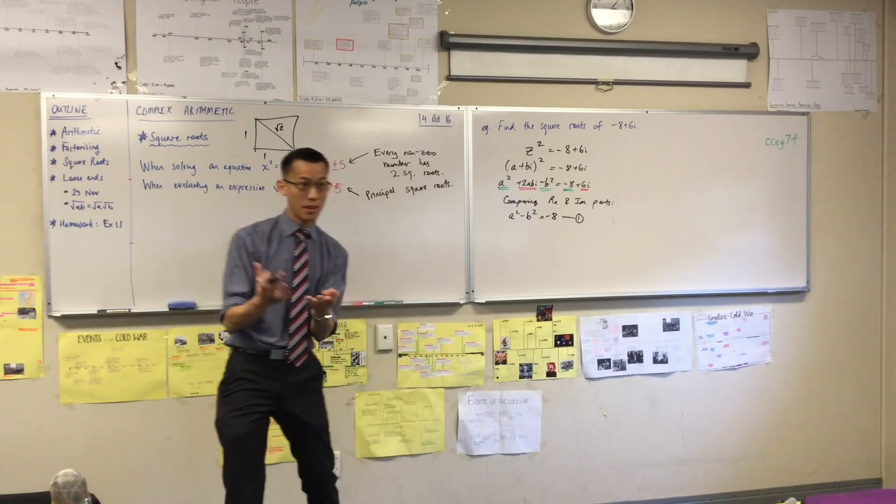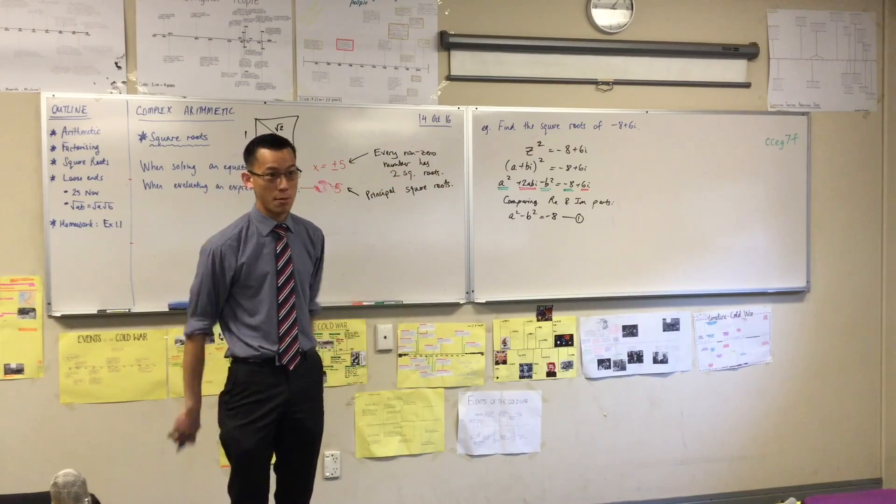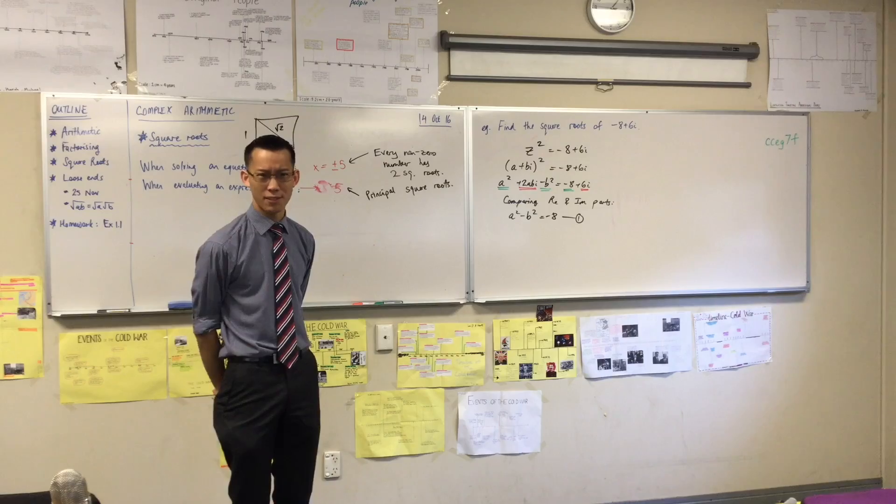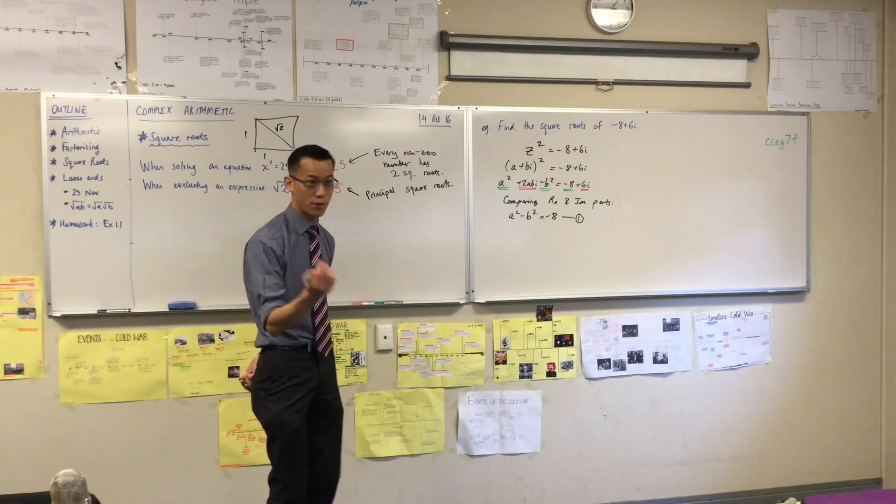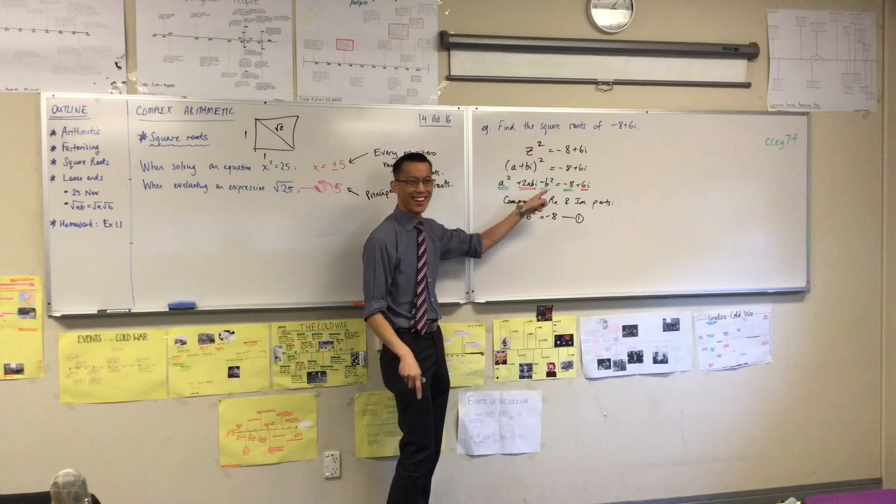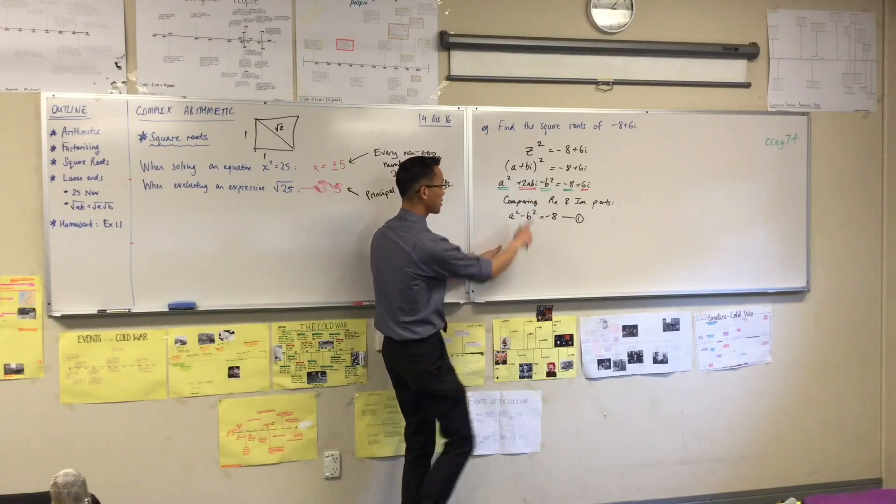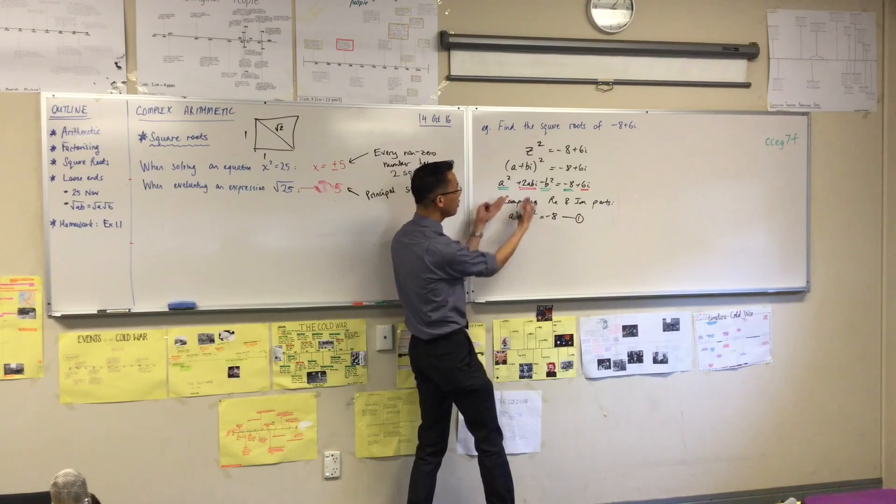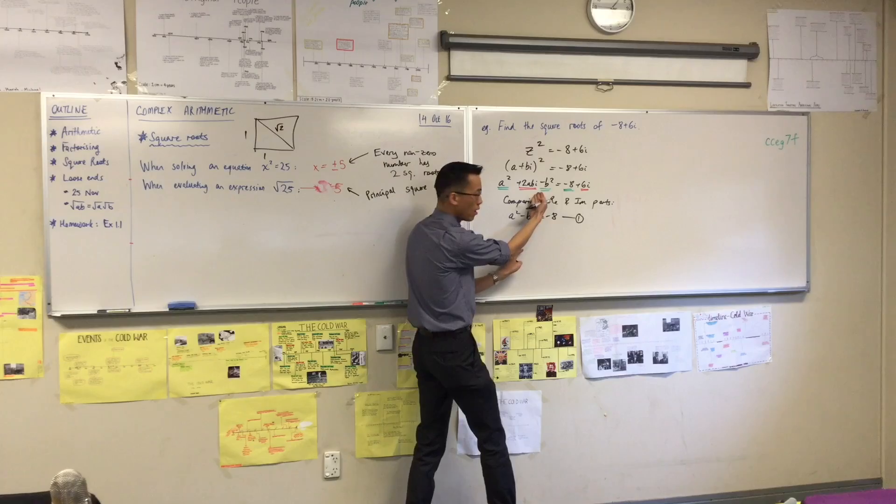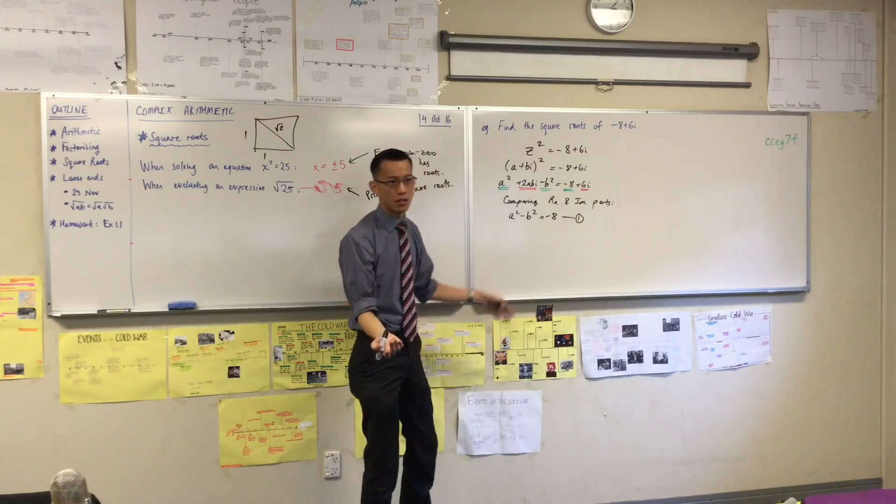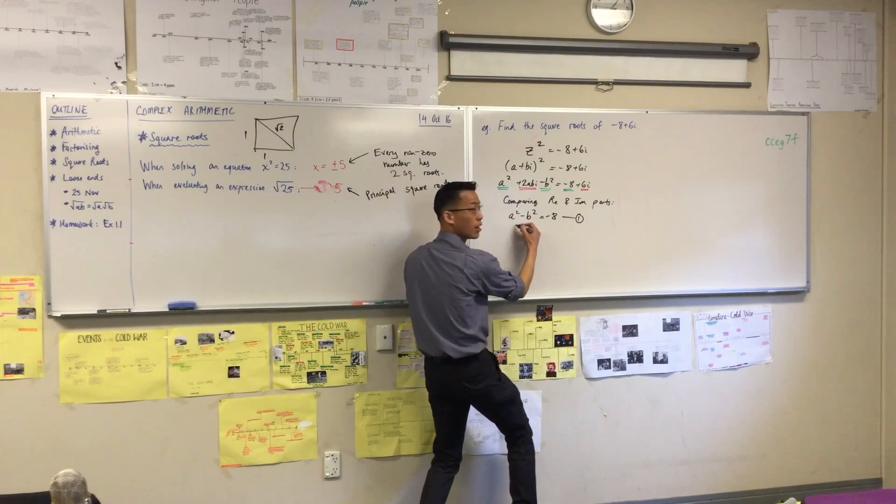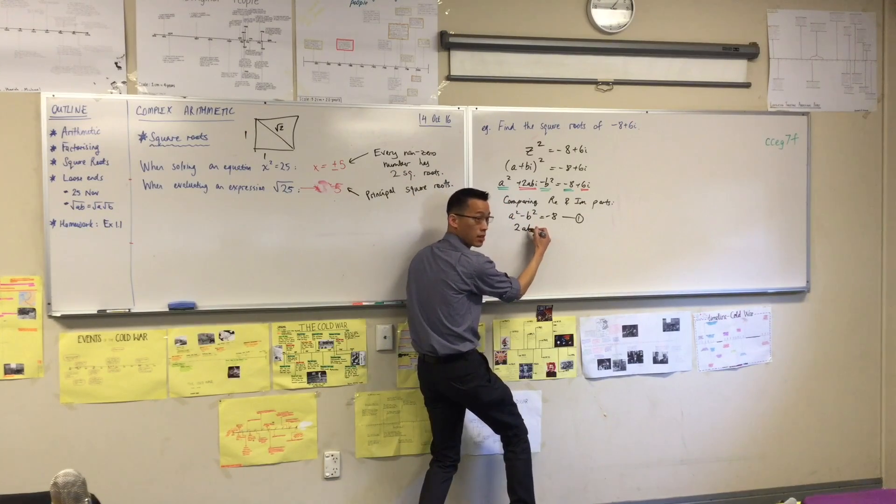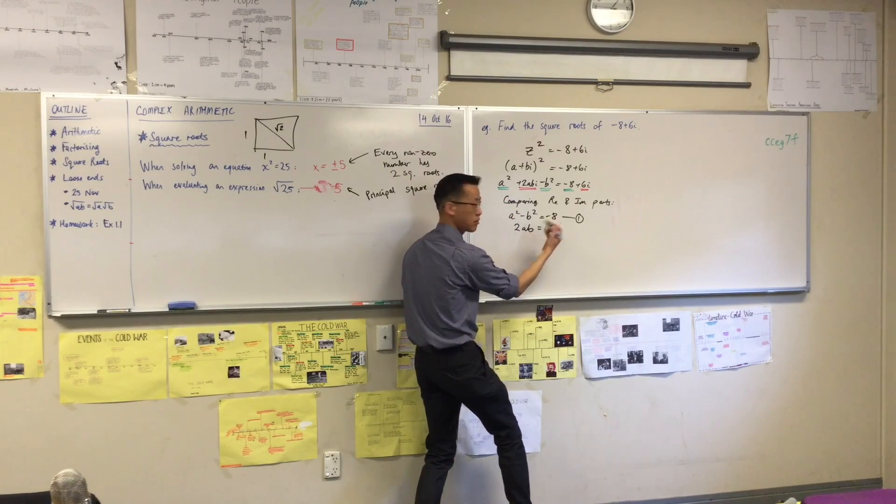I've got two unknowns, a and b, so I'd better have two simultaneous equations. You knew that, right? If you've got two unknowns, you'd better have two equations, three unknowns, three equations. God help you if you have four unknowns. So here, I'm going to compare the imaginary parts. Now, right? I could say 2ab i equals 6i. That would be true. But I don't need the i's anymore, right? It's the a's and the b's I'm trying to work with. So all I'm going to say is 2ab is equal to 6.